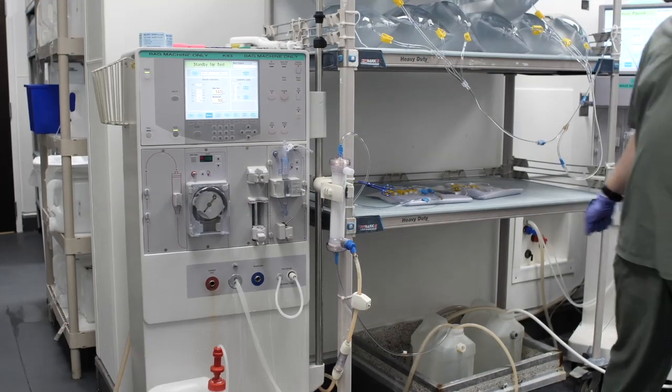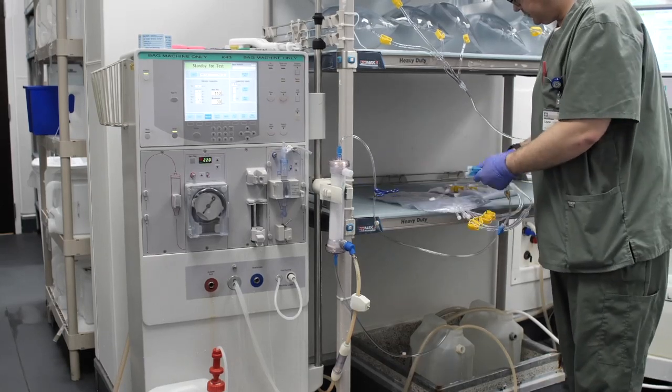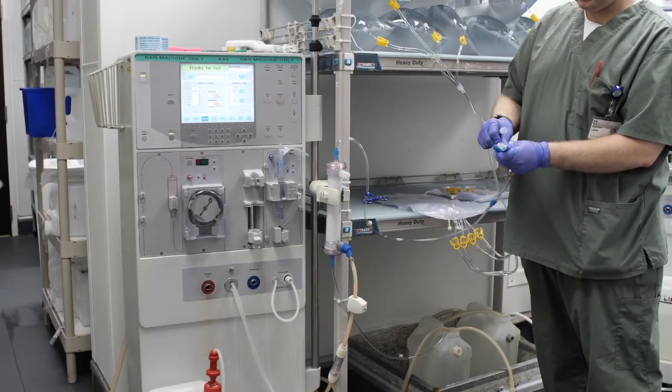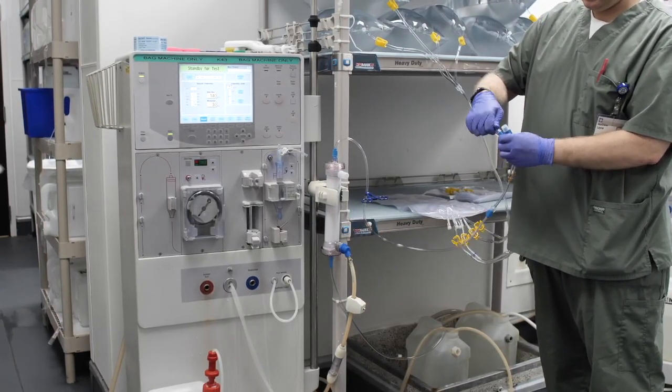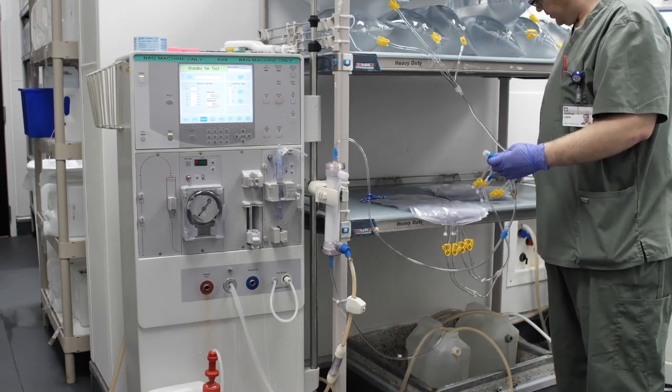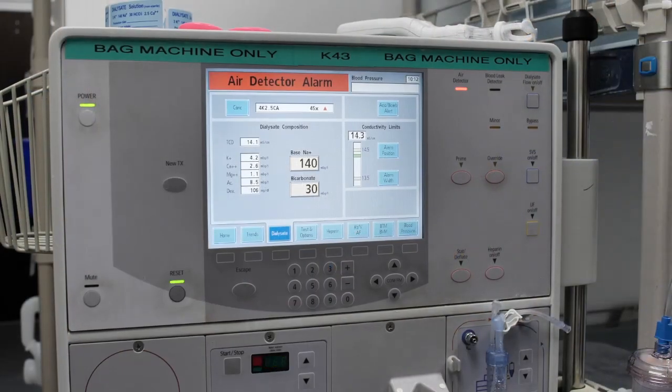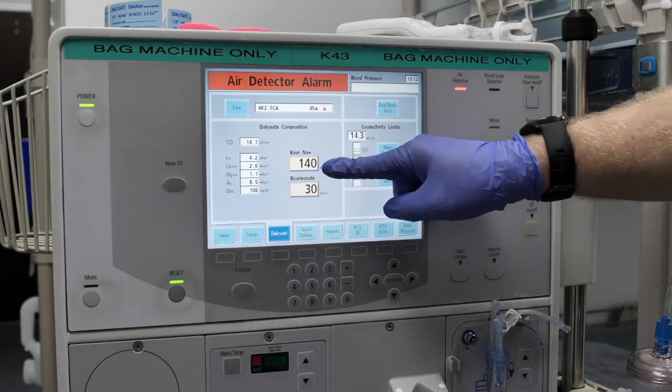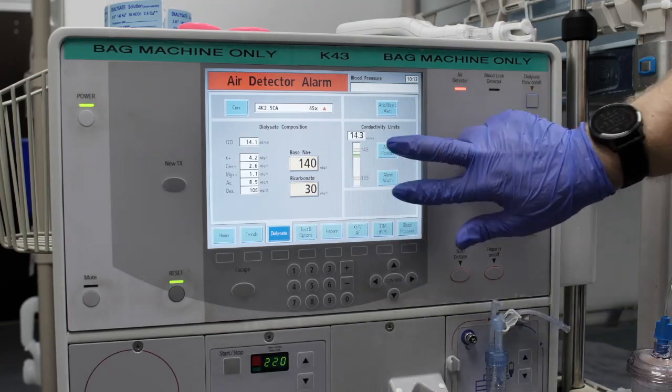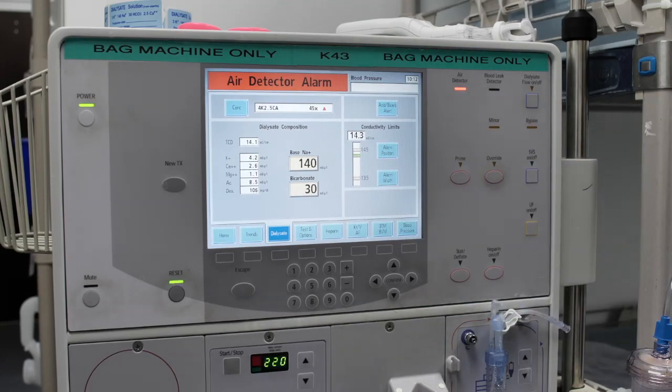Step 13: When ready to begin production, using aseptic technique, attach two four-bag Liberty drain bag sets to the two capped ends of the splitter line. Step 14: Ensure the machine is set to the proper dialysate settings, the proper acid concentrate solution is connected, and the machine is operating in the appropriate conductivity range.